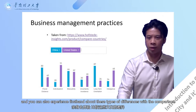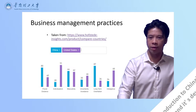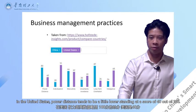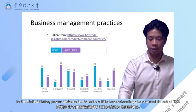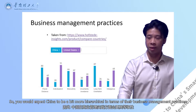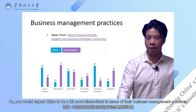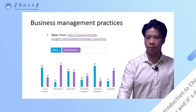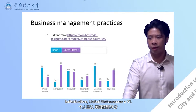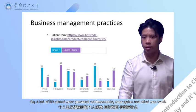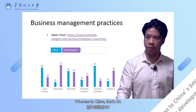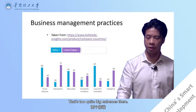The comparison: power distance. As you might have guessed, in Western cultures, in the United States, the power distance tends to be a little lower, standing at a score of 40 out of 100. Whereas for China, it's 80. So you would expect China to be a bit more hierarchical in terms of their business management practices. Individualism: the United States scores a 91, so a lot of it is about personal achievements, your gains and what you want. Whereas in China, that's 20 — two quite big extremes.